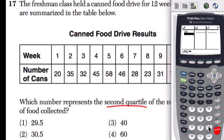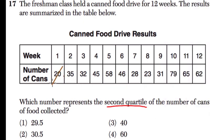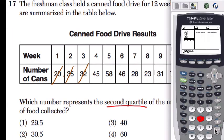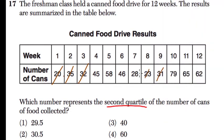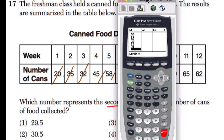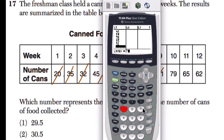I have 20, and then 35, 32. And I recommend crossing these off as you go along. And then 45, 58. Just entering these in. 46, 28. Okay. 23, 31. So I'm almost done here. Cross those off. Okay. Next I have 79, and 65, and 62. Okay. So I've got all this data.